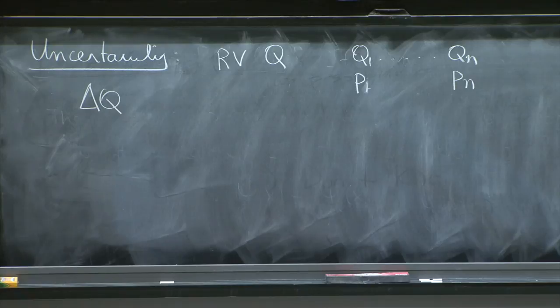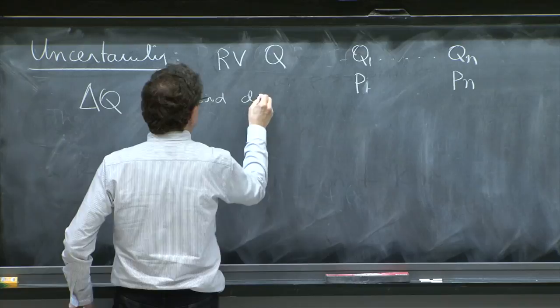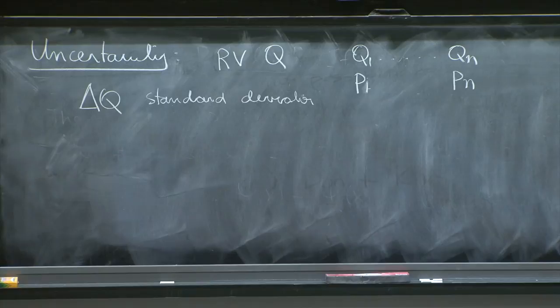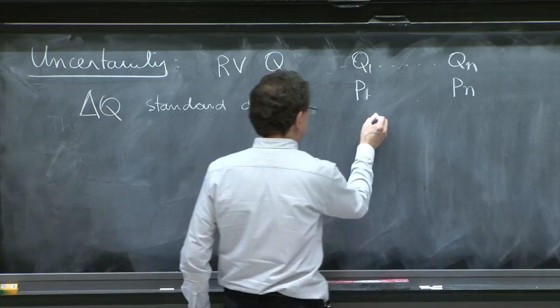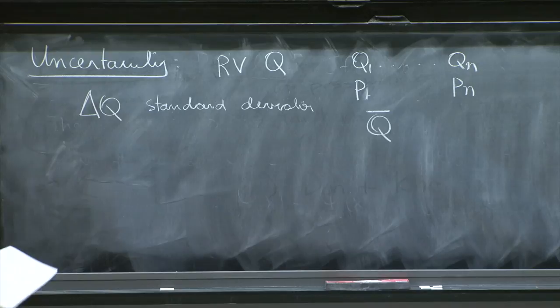As the uncertainty, the standard deviation. And how is that standard deviation defined? Well, you begin by making sure you know what is the expectation value or the average value of this random variable.